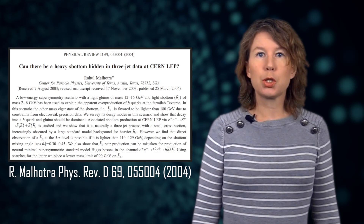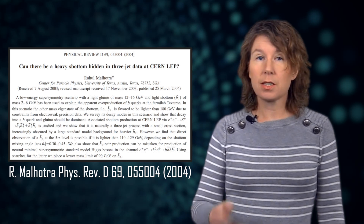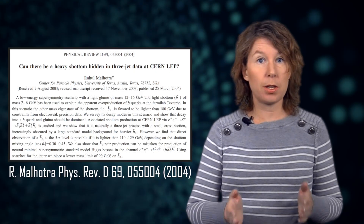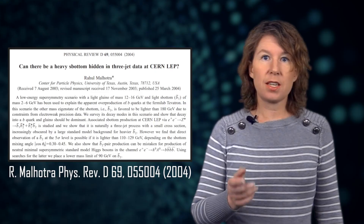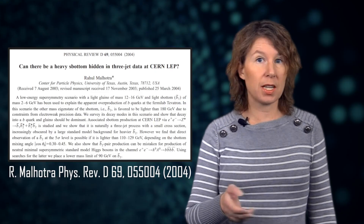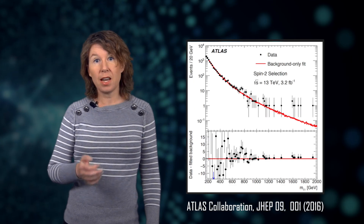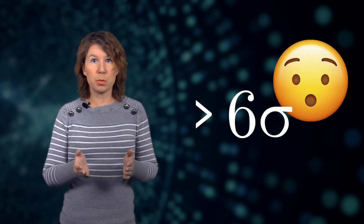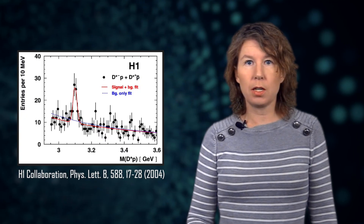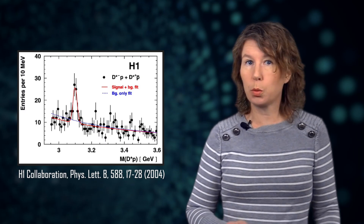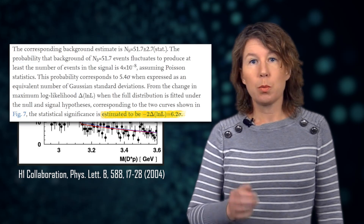Then in 2003, supersymmetry was 'discovered' again in the form of a supposed sbottom quark — the hypothetical supersymmetric partner of the bottom quark. That signal too was at about three sigma, but then disappeared. In 2015, the diphoton anomaly made it above four sigma and disappeared again. There have even been some six sigma signals that disappeared, though with no known interpretation in terms of new physics. For example, in 1998 the Tevatron at Fermilab measured events dubbed 'superjets' at six sigma — never seen again. In 2004, HERA at DESY saw pentaquarks — particles made of five quarks — with six sigma significance, but that signal also disappeared.